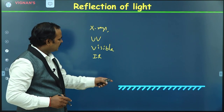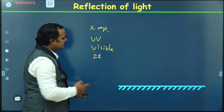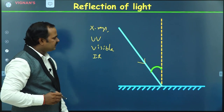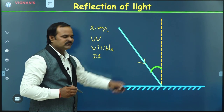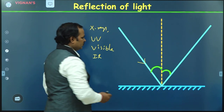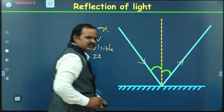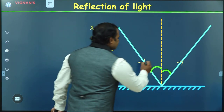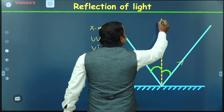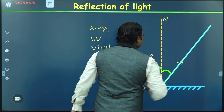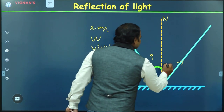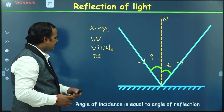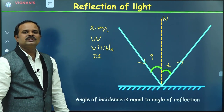Let us consider a surface. Radiation is incident on the surface and reflects back into space. This is the reflected radiation. When we say light is reflected, there is an angle of incidence and a normal to the surface, and this is the angle of reflection.